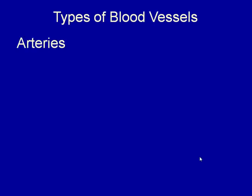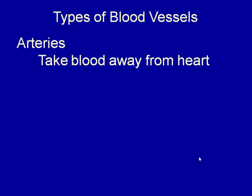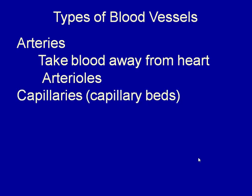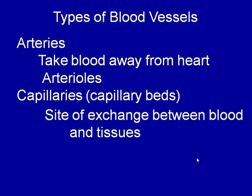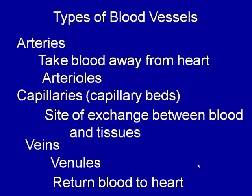There are three types of blood vessels. Arteries take blood away from the heart, and as they get further from the heart they get smaller and smaller — we call them arterioles. Then we have capillaries, which are arranged in capillary beds. It is actually in the capillaries that we exchange material between the blood and the tissues. To return blood to the heart, we have the veins, which start out as small vessels called venules, get into larger structures called veins, and ultimately return blood to the heart.